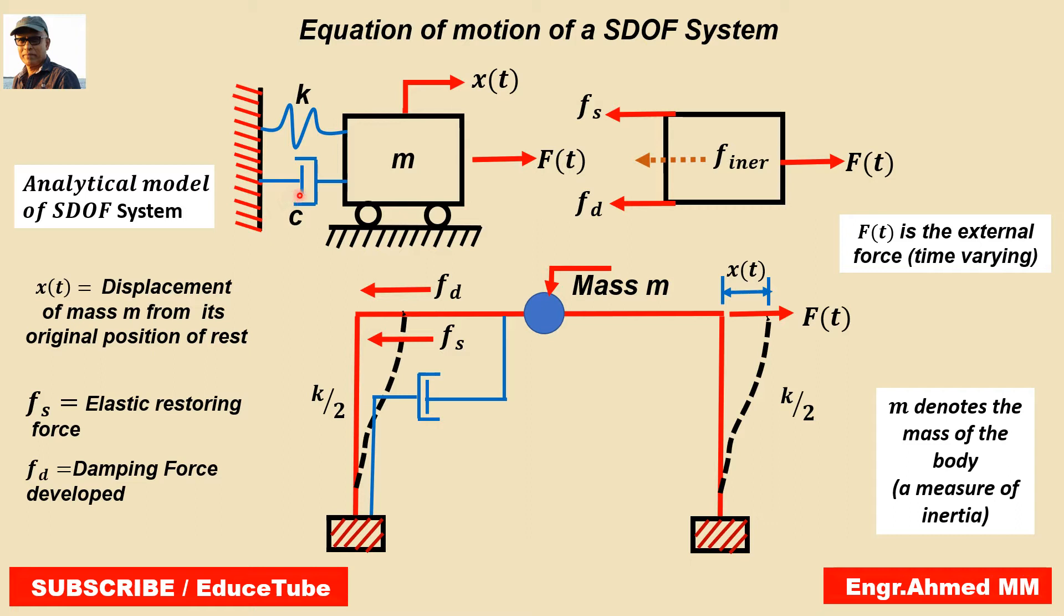A damping element or dashpot C representing the frictional characteristics and energy dissipation of the structure. Fourth, an excitation force Ft representing the external forces.